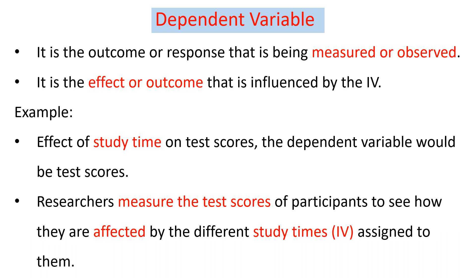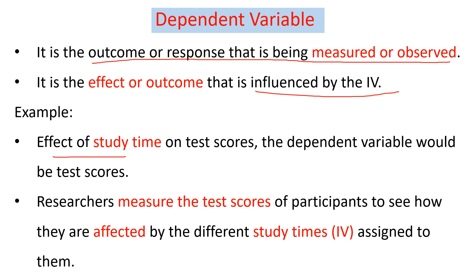The second type of research variable is the dependent variable. It is the outcome or response that is being measured or observed as a result of the effect of the independent variable. Considering the previous example — the effect of study time on the test score — the dependent variable is obviously the test score, which depends on and is affected by the study time, the independent variable.